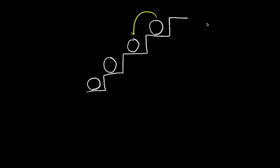And likewise, when the ball is going down the step — if you know a little bit about physics — it would have to lose some gravitational potential energy. This staircase analogy is similar to how an electron is transitioning between energy levels.